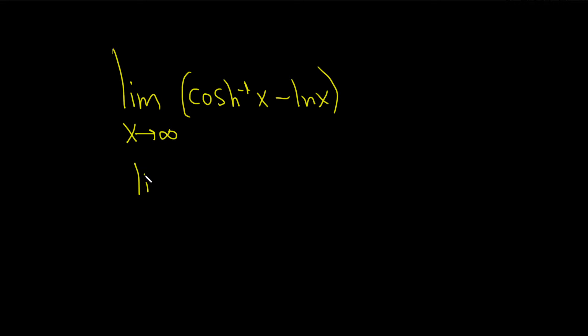So we'll start by rewriting cosh inverse of x using the actual definition. So it's actually equal to the natural log of x plus the square root of x squared minus 1. And that would be cosh inverse of x and then minus our ln x here. So we have this.